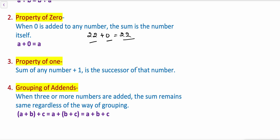Property 3: Property of one. The sum of any number plus 1 is the successor of that number. For example, 16 plus 1 is equal to 17. So when 1 is added to 16, the answer is 17, and 17 is the successor of 16.